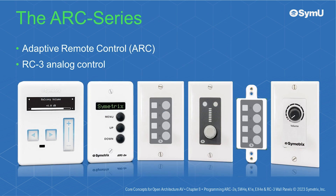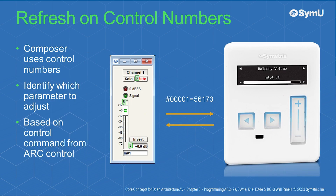One line of Symmetrix remote control devices is the Arc series. Also offered and considered in the same family is the RC3 analog control. While not strictly speaking an Arc controller, the RC3 is a very useful and simple-to-use device. It is often employed in projects with additional Arc controllers. Composer uses control numbers to identify which parameter to adjust based on the control command from the Arc control.